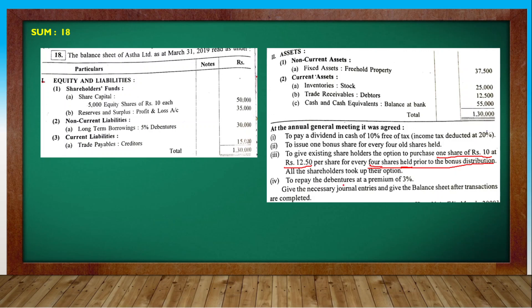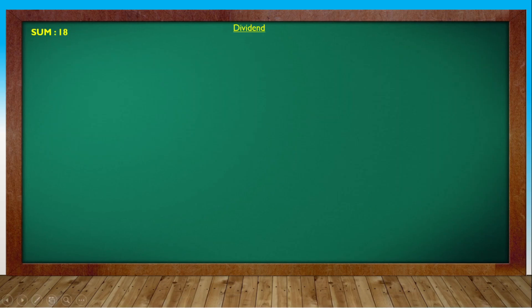Number four: to repay the debentures at a premium of 3% - the debentures are to be returned at 3% premium. Give the necessary journal entries and prepare the balance sheet after all transactions are completed. Journal entries are to be written based on this information.